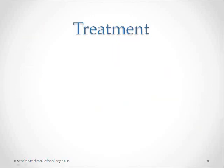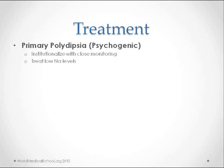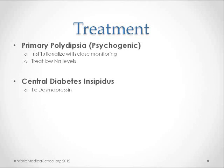The treatment of primary or psychogenic polydipsia involves institutionalizing the patient with close monitoring. Low levels of sodium need to be corrected as well. In central diabetes insipidus, since the problem is a deficiency in ADH, you treat them by giving ADH. Desmopressin is a modified form of the normal hormone arginine vasopressin. It binds to the V2 receptors in the renal collecting ducts and increases water reabsorption.